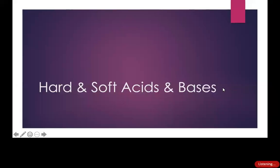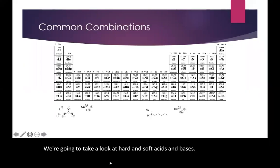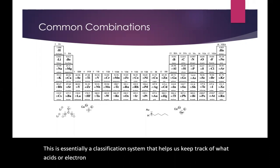We're going to take a look at hard and soft acids and bases. This is essentially a classification system that helps us keep track of what acids or electron acceptors commonly go with what bases or electron donors.